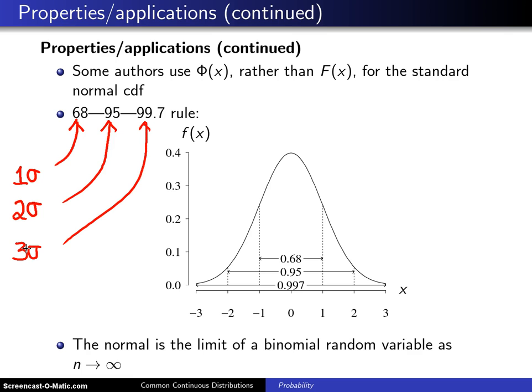And if you go ± three σ, that is, if you take the area underneath the probability density function between μ - 3σ and μ + 3σ, you will get about 99.7% of the area.